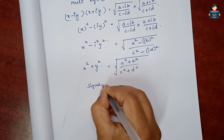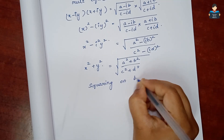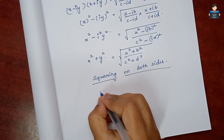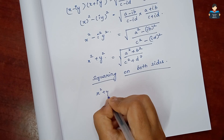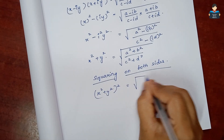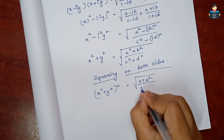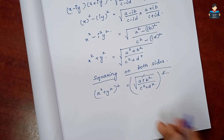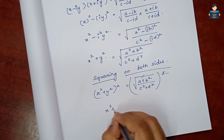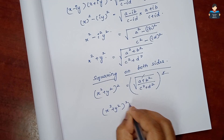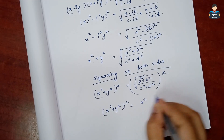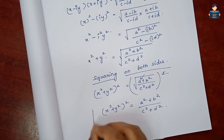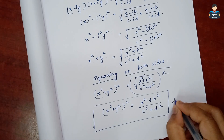Squaring both sides: (x² + y²)² = (a² + b²)/(c² + d²). Hence proved.